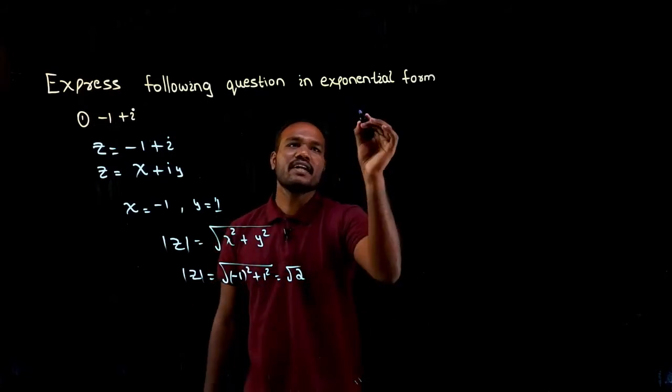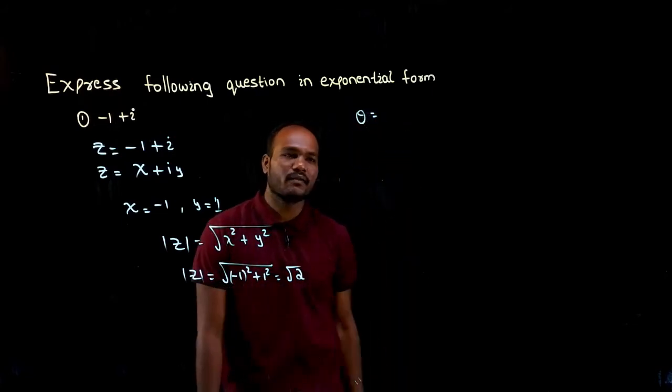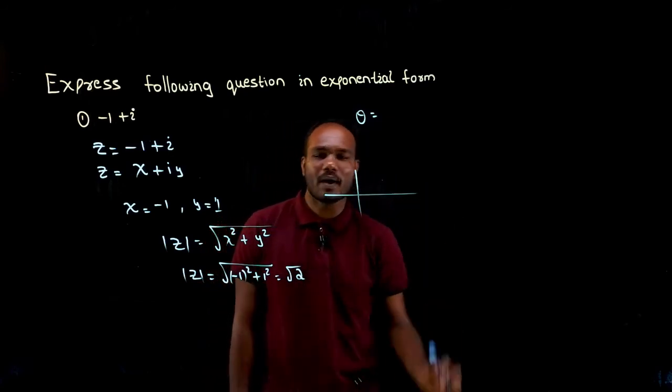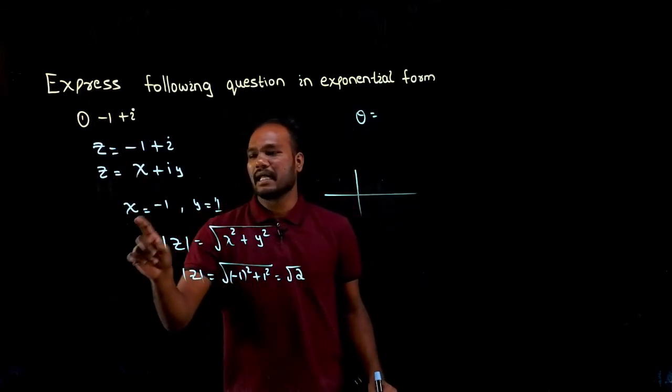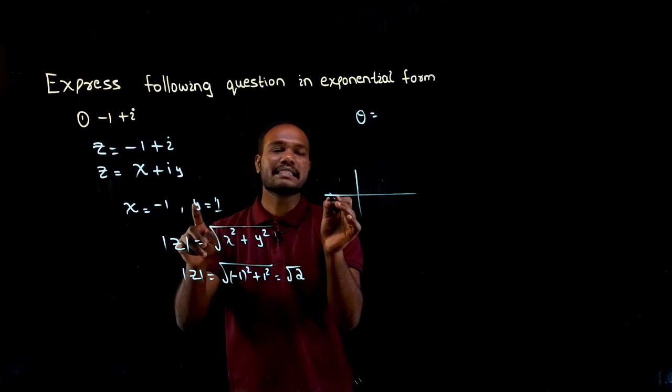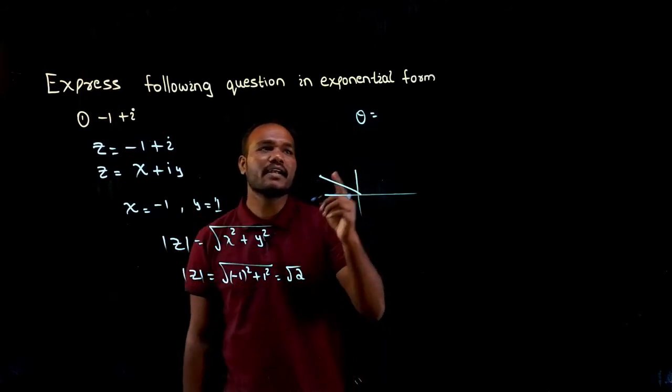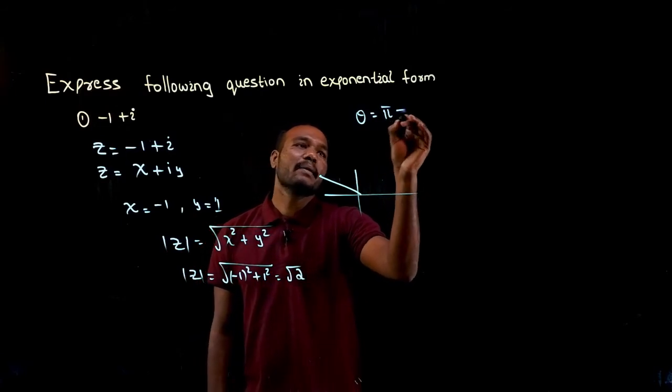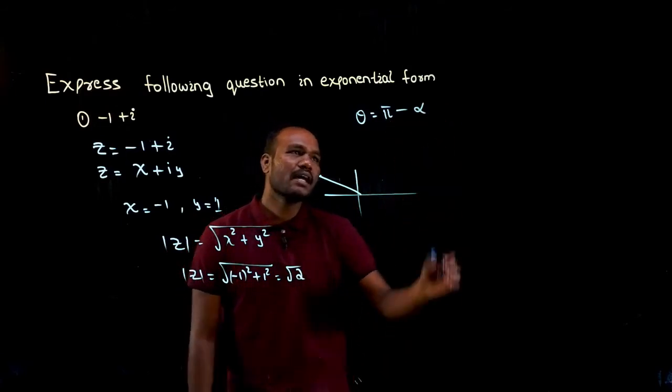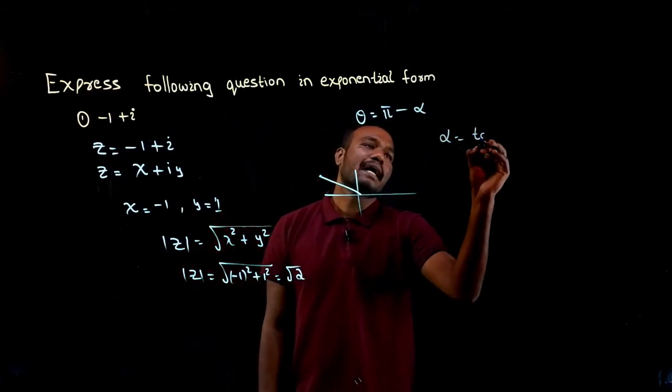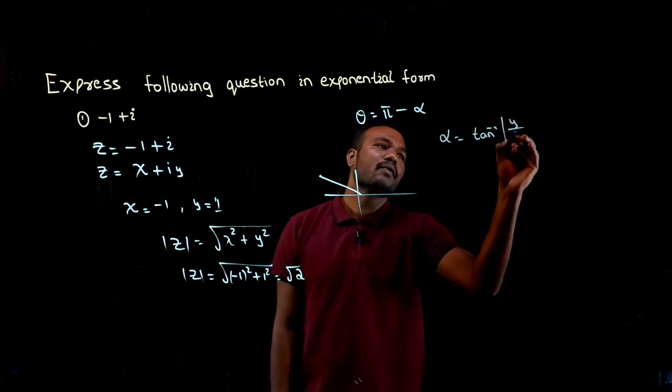Okay, next what we need to find? We need to find the value of theta. To know the theta, what we need to know? We need to know quadrant. X is negative, X is negative. Y is positive. This is third quadrant. In third quadrant, what can we write? We can write theta as π - α. What is alpha? Alpha is nothing but tan⁻¹ of mod y upon mod x.